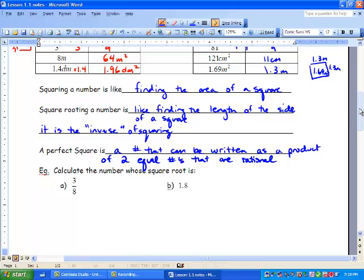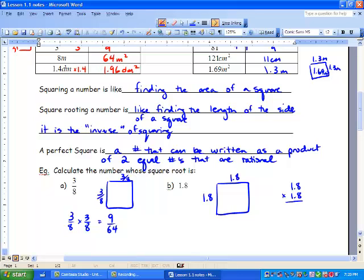So let's calculate the number whose square root is 3 over 8. So what that is asking is if we draw a square, and this works for every single square, what number is the square root? So we've got 3 over 8 here, 3 over 8 here. We want to know the number that if we square root it, we get 3 over 8. Well, we just go 3 over 8 times 3 over 8, and we get 9 over 64. Next, we're looking to see what number can we square root to get 1.8? And we just go 1.8 times 1.8, and we get 3.24 units squared.